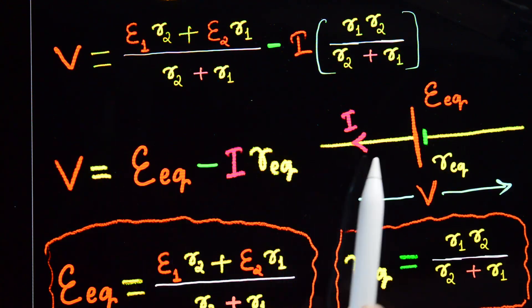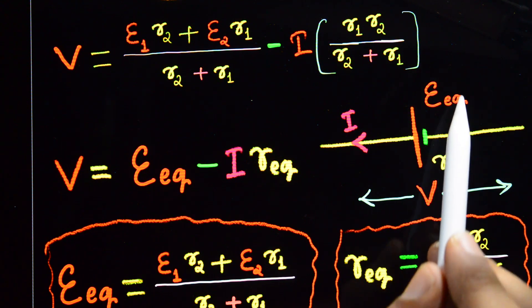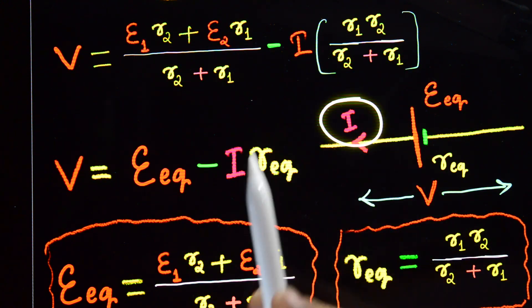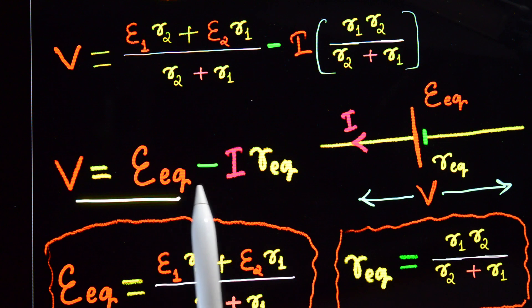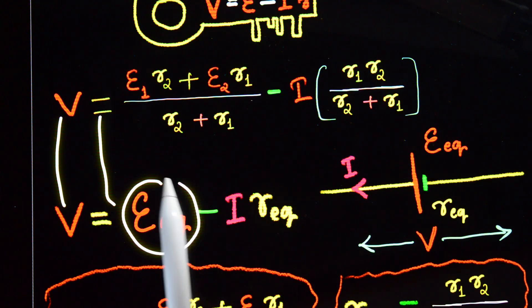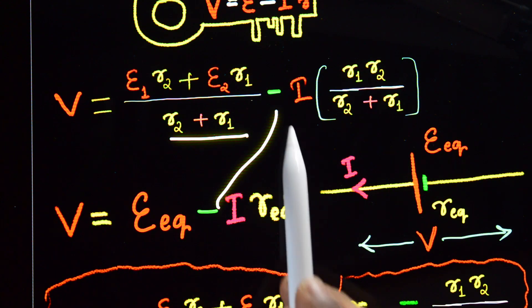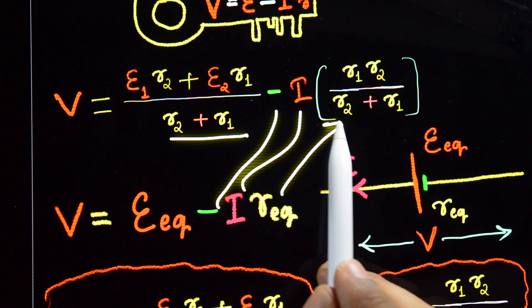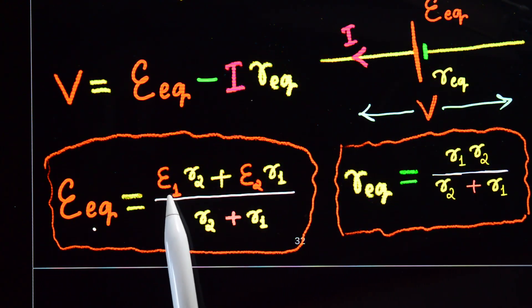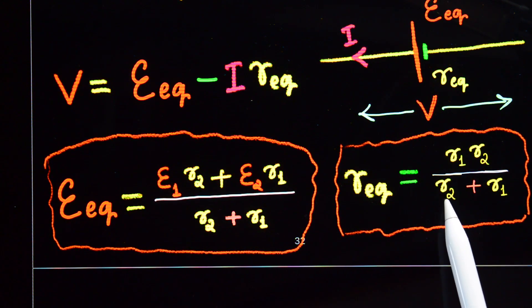The single equivalent cell has EMF E_equivalent and internal resistance R_equivalent, giving v = E_equivalent - i·R_equivalent. Comparing the two equations: E_equivalent = (e1·r2 + e2·r1) / (r2 + r1), and R_equivalent = (r1·r2) / (r2 + r1).